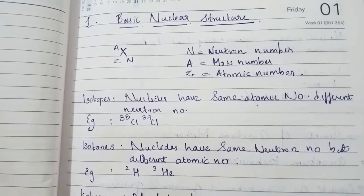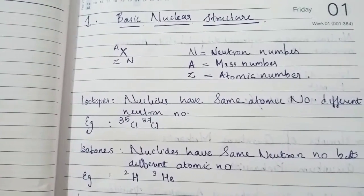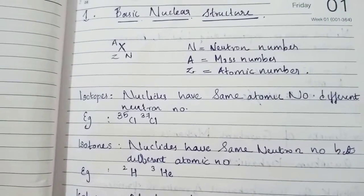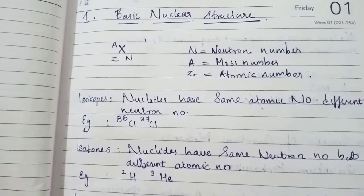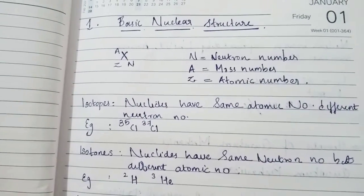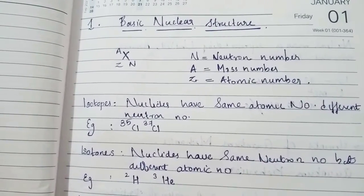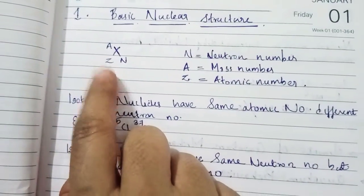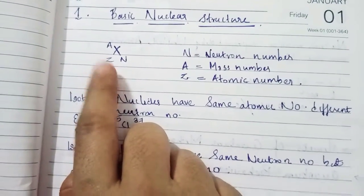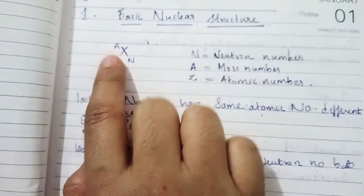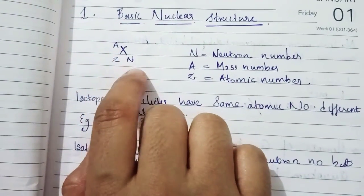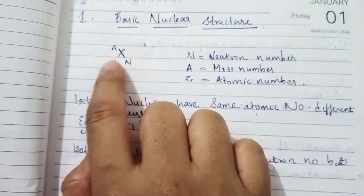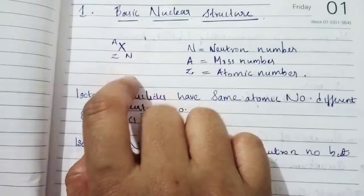Today we are discussing the nuclear physics research book by Kenneth S. Crane. First, the basic nuclear structure. This is the representation of a nuclide that is X, where Z is the atomic number, A is the mass number, and N is the neutron number. This is the representation of a nuclide.